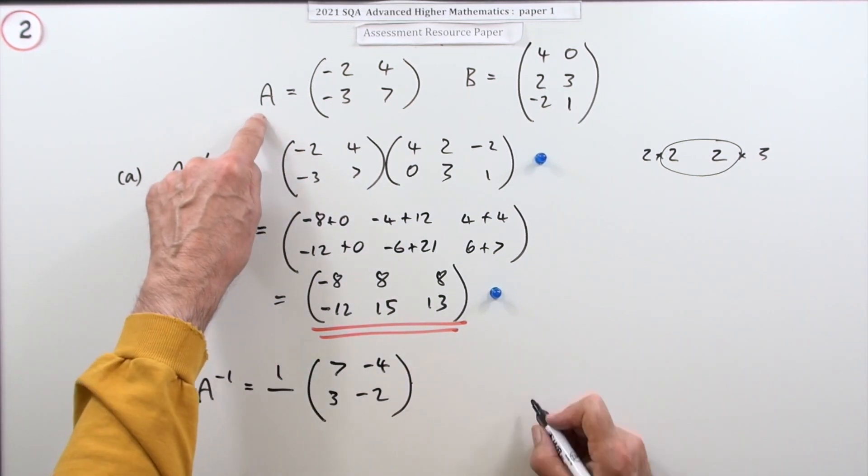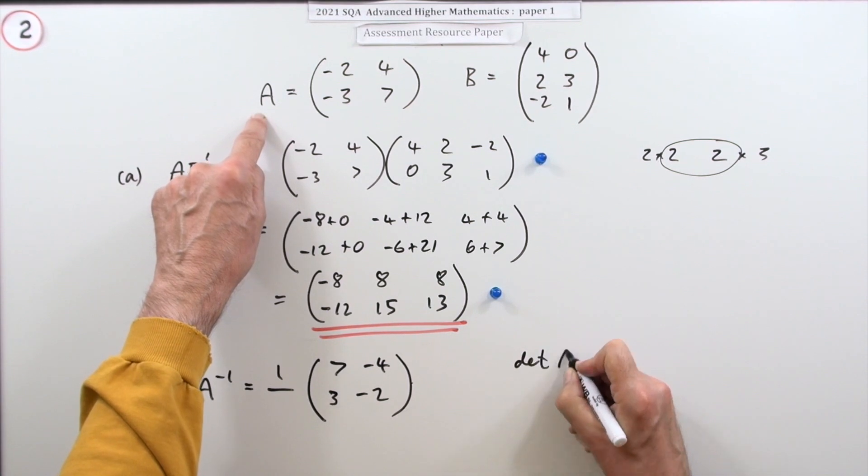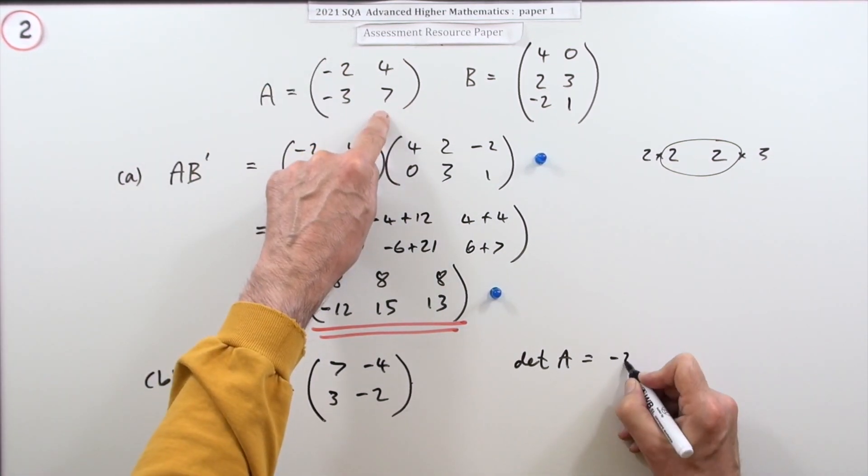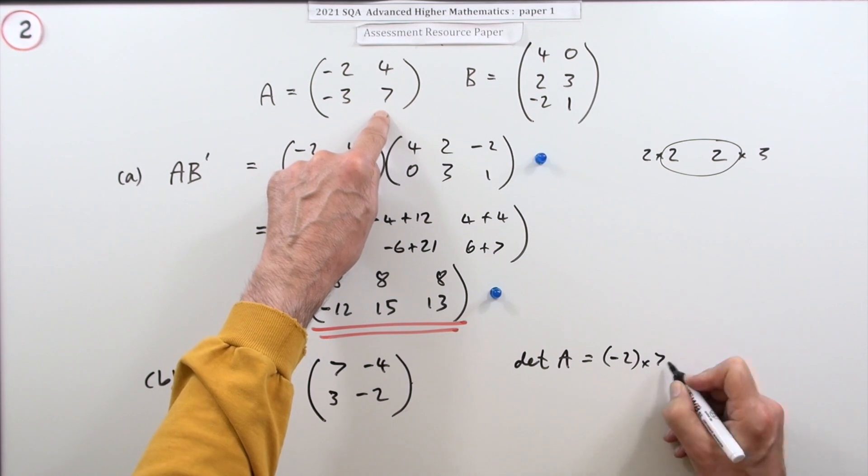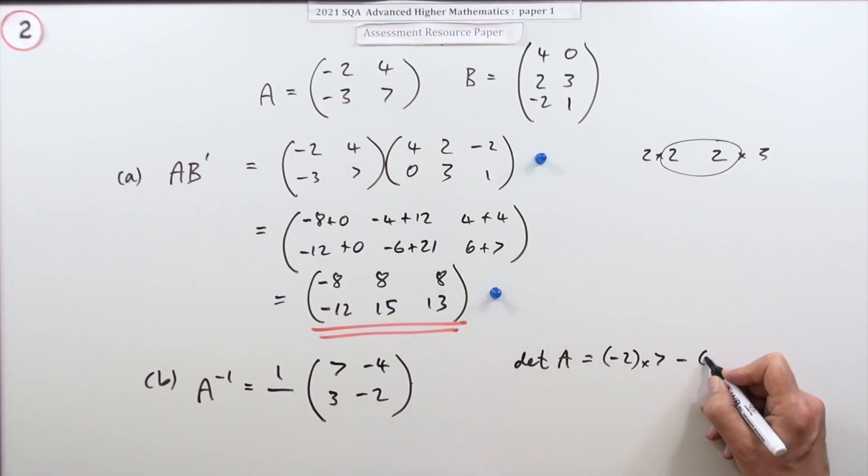Now the determinant of A—it's just the main diagonal product: -2 times 7 minus the other diagonal product -3 times 4. So it's -14 plus 12, which is -2.